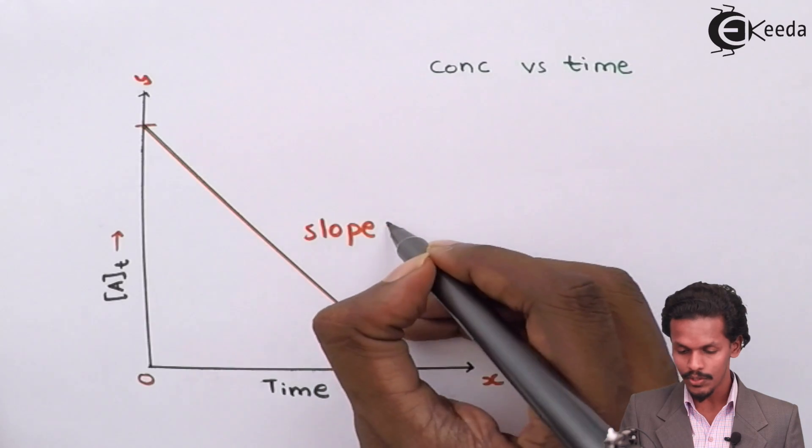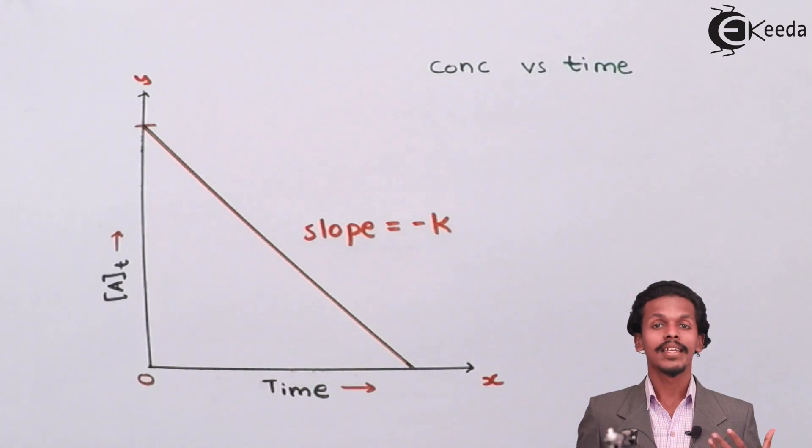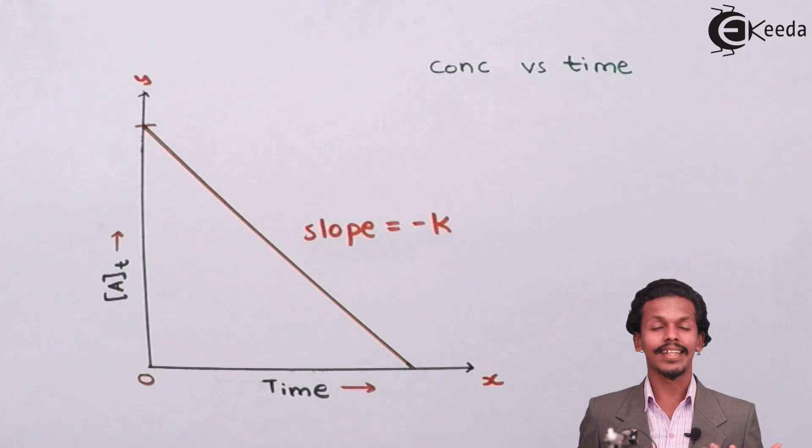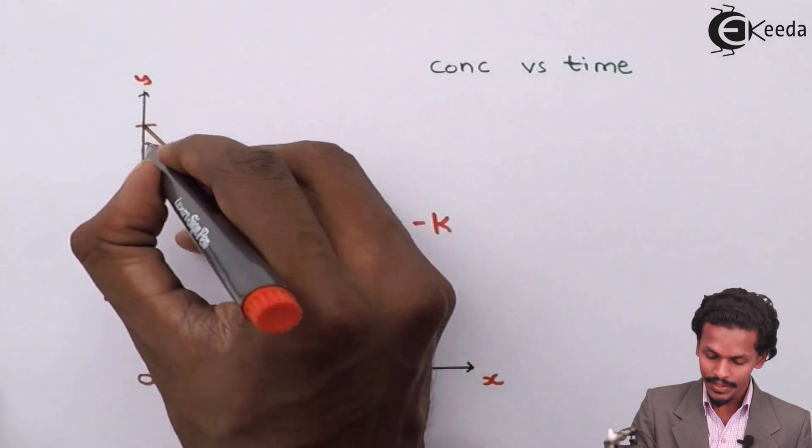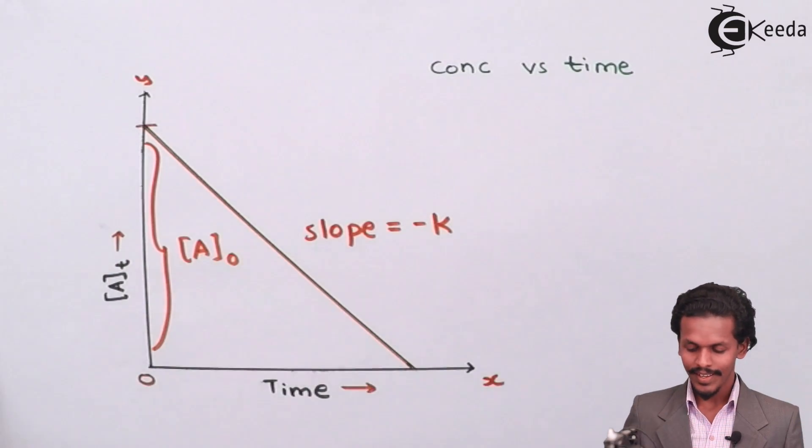which means slope equals minus k. And ultimately, the intercept, that is c, is nothing but A0.